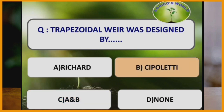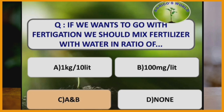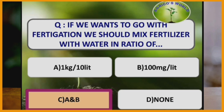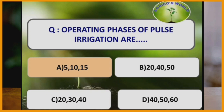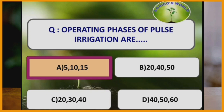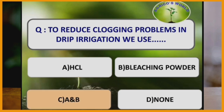Trapezoidal weir was designed by scientist Cipolletti. For fertigation, we should mix the fertilizer with water in the ratio of either 1 kg per 10 litres or 100 milligrams per litre. Operating phases of pulse irrigation are 5, 10 and 15.